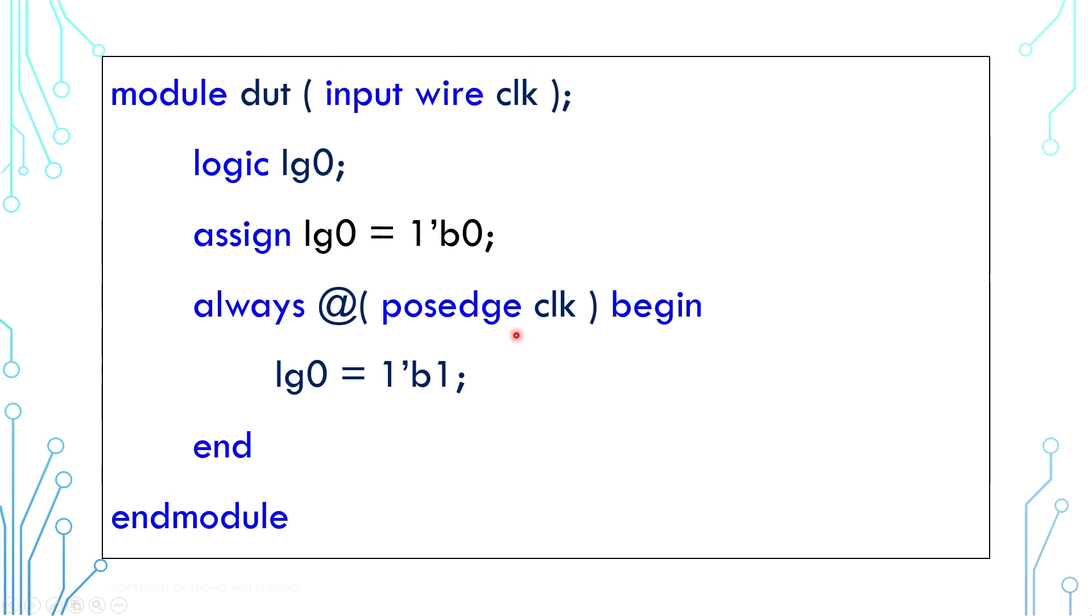Here's another example. There is an assign statement and an always block. This is a multiple drivers issue. The assign statement will drive the logic at all times and thus will conflict with the always block at the positive edges of the clock. This will cause compilation failure.